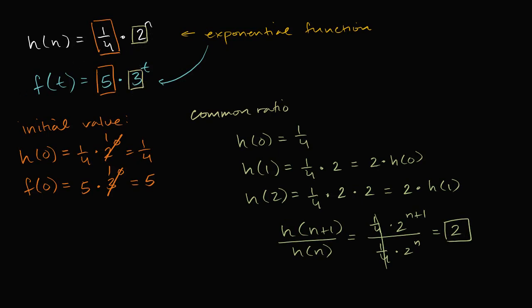If we were to go the other way around, if someone said, hey, I have some function whose initial value, so let's say I have some function g, and we know that its initial value is five, and someone were to say its common ratio is six. What would this exponential function look like? And they're telling you this is an exponential function.